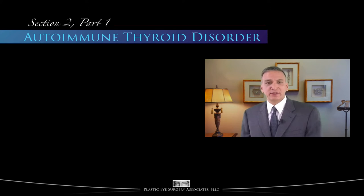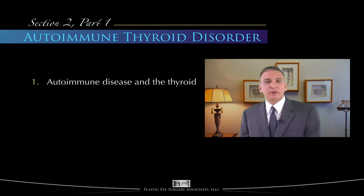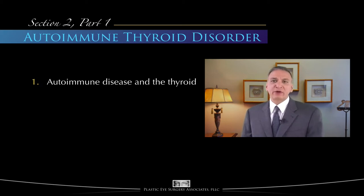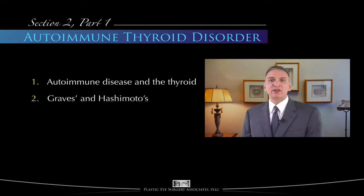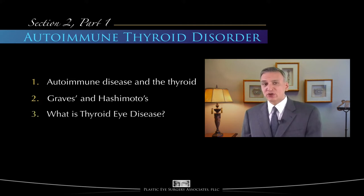Section 2 of this video series on thyroid eye disease focuses on understanding autoimmune disorders in general, and autoimmune disorders that may also affect the thyroid gland in particular. This section contains three short videos. The first video, Autoimmune Disease and the Thyroid, reviews what is an autoimmune disorder and how the thyroid may be affected. The second video talks about what really are Graves' and Hashimoto's diseases. And finally, the third video explains the relationship between thyroid eye disease and autoimmune thyroid disorders.